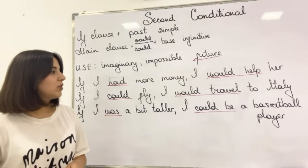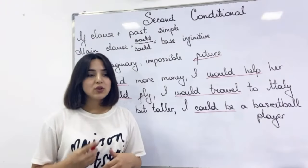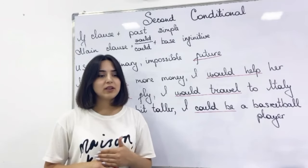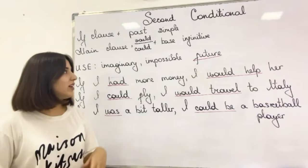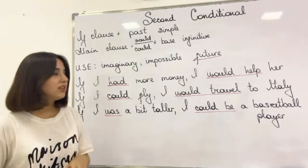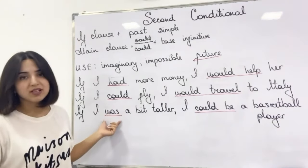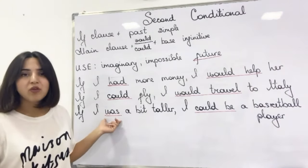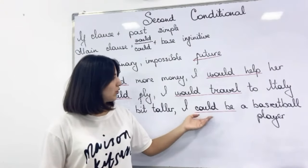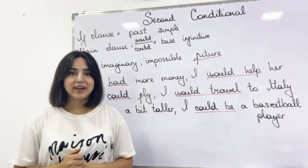And the last one: if I was a bit taller, I could be a basketball player. So I'm not tall enough to be a basketball player, but it's my wish — that's why I use my imagination. 'Was' is the past simple form of 'to be', and I have used 'could' instead of 'would' here — could be a basketball player.